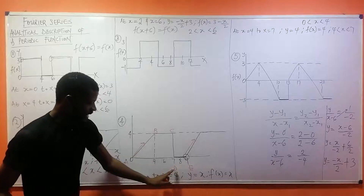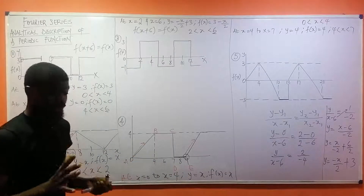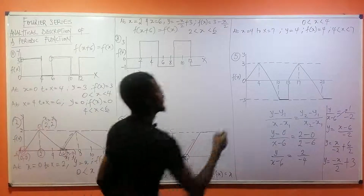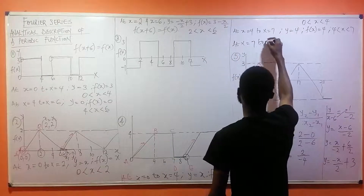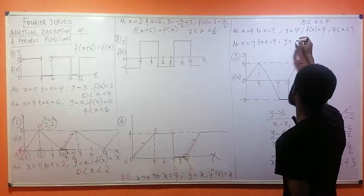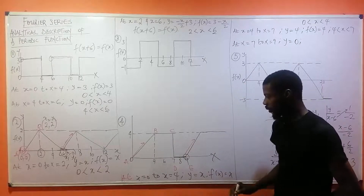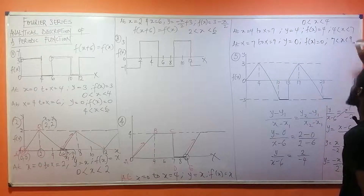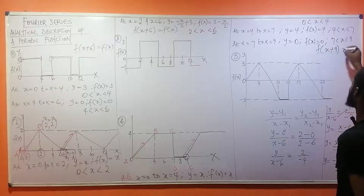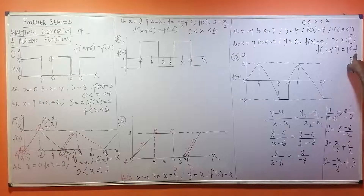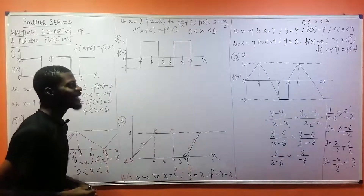The last part, D to E: the values of x go from seven to nine. The value of y at this position is zero. So f(x) = 0, and this occurred at 7 < x < 9. Therefore f(x + 9) = f(x), because nine is the period of this function.